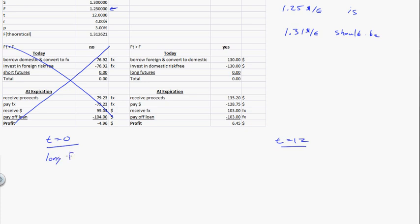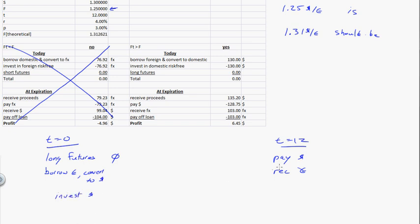If it's priced too low, you want to buy it — go long futures. Entering the contract has no cash flow today. Going long futures means you're going to buy in the future: you'll pay dollars and receive foreign currency — receive euros. Since you know you're going to be paying dollars, you borrow the euros and convert to dollars, then invest dollars.